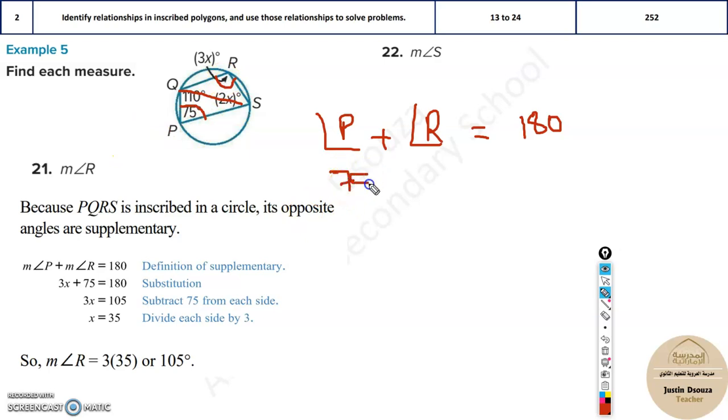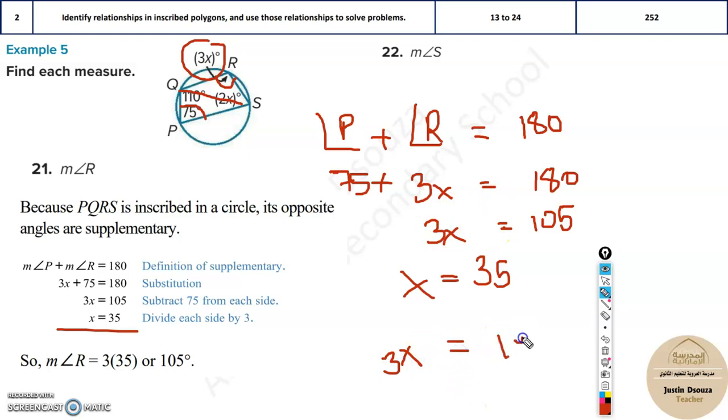You need to find measure of R. P is over here, 75, and R is 3x. All you need to do is put it in the calculator, or directly take 75 to the other side, simplify. It'll be 105 over here, 180 minus 75, 3x. 3 goes, 35. X is 35, so you can easily solve it. But it is not over. X is 35 degrees, but remember, you need to solve for R. Angle R is given by 3x, so multiply 3x. This is the answer, 105. It would be 105 degrees.